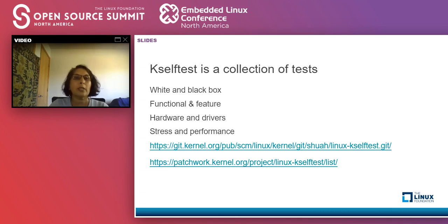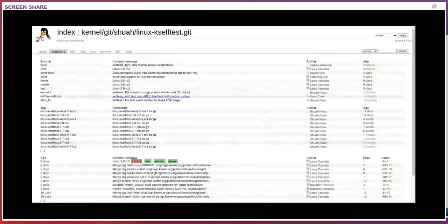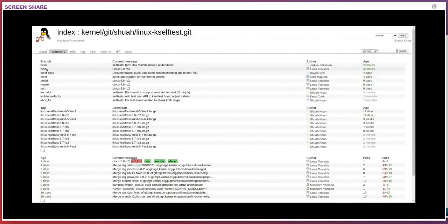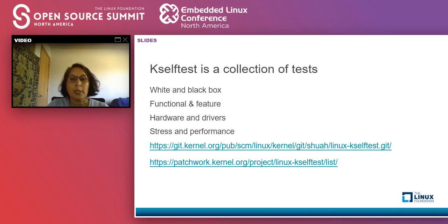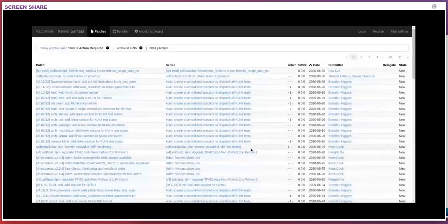This is what the kselftests repository looks like. K-Unit also funnels through this repo, so you will see K-Unit fixes, K-Unit next and next fixes. This is what the selftest kit looks like. There is also a patchwork project where patches are maintained — you can go look at the patches that come in through patchwork.